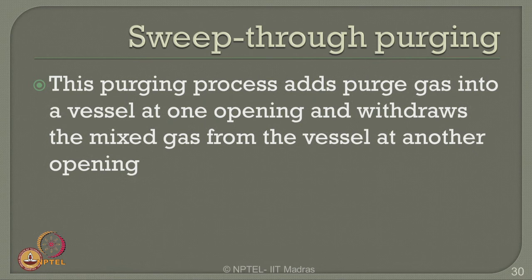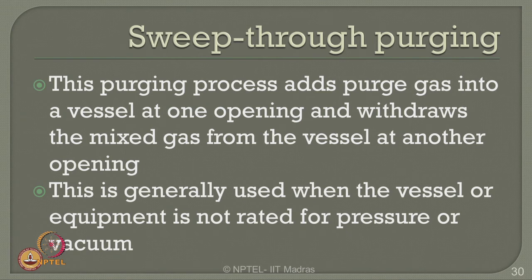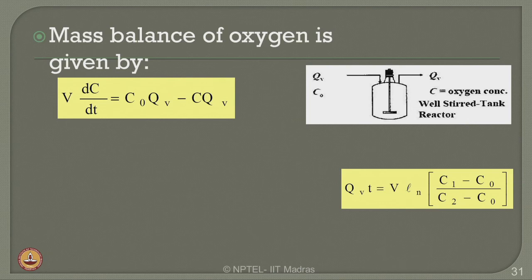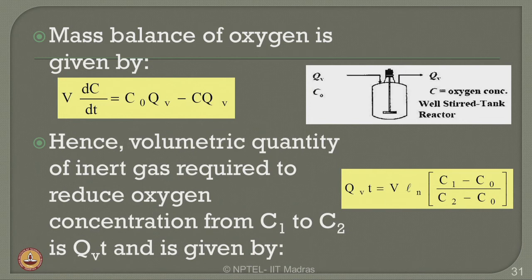One can also do sweep-through purging. This process adds purge gas into a vessel at one opening and withdraws the mixed gas from the other end. This is generally used when the vessel or equipment is not rated for pressure or vacuum purging. The mass balance of oxygen in this case is given by the equation in the slide. The volumetric quantity of inert gas required to reduce oxygen concentration from c1 to c2 is Q_vt as given by the equation.